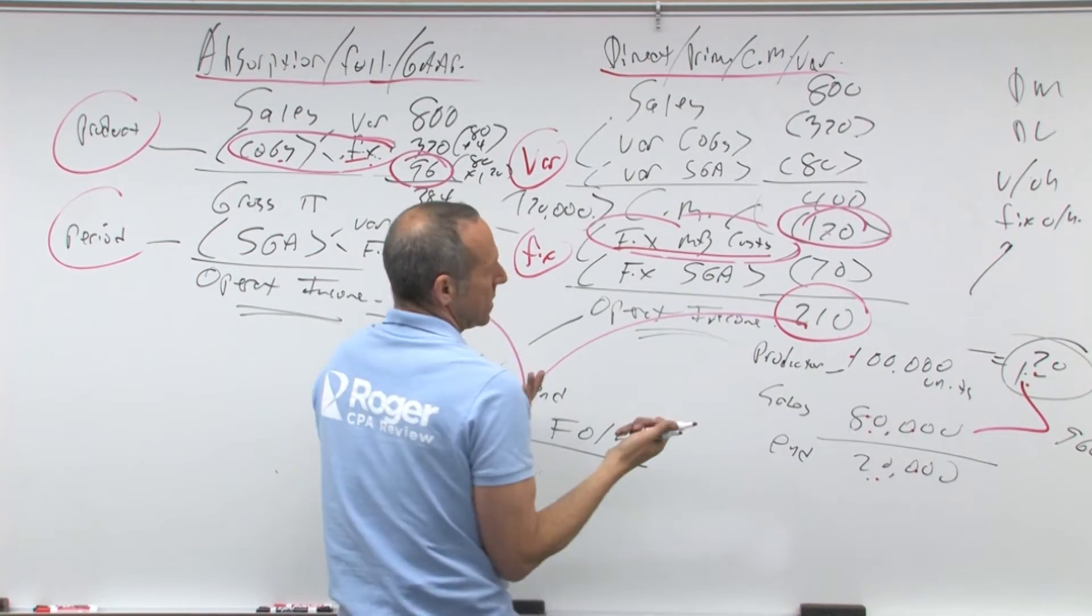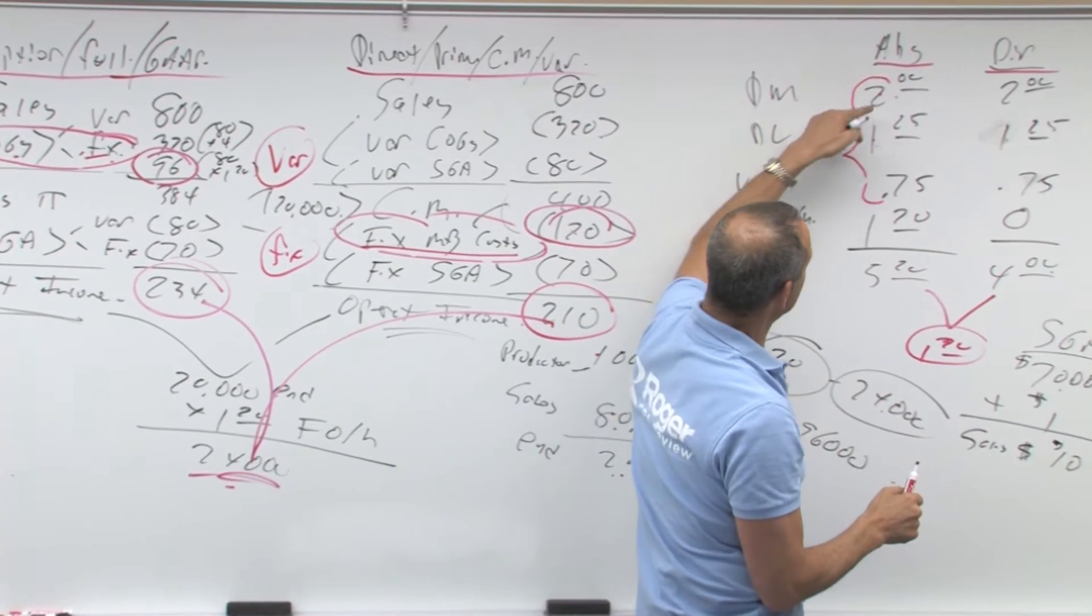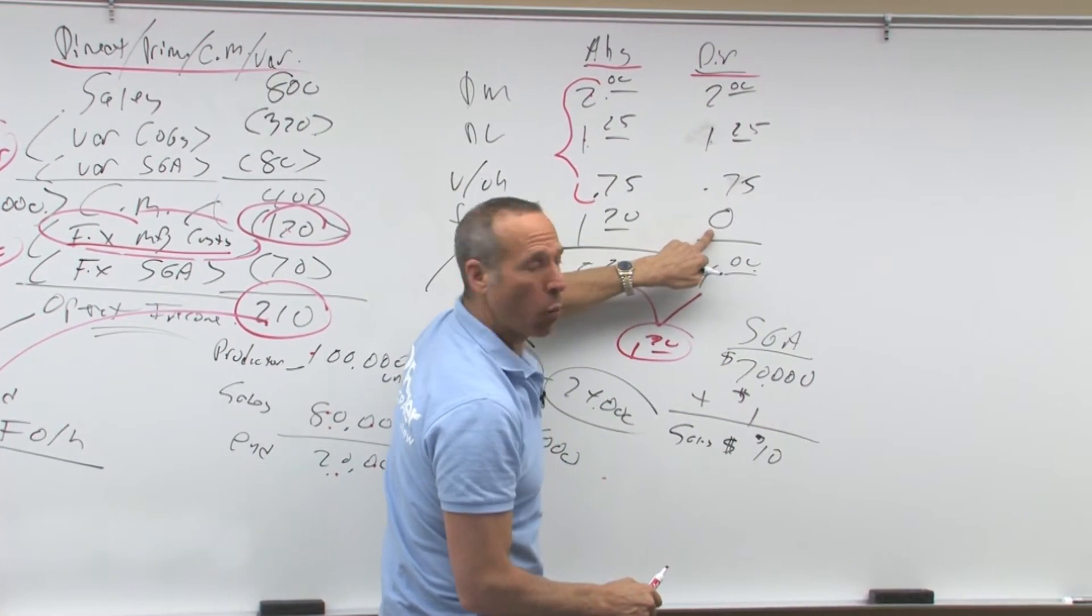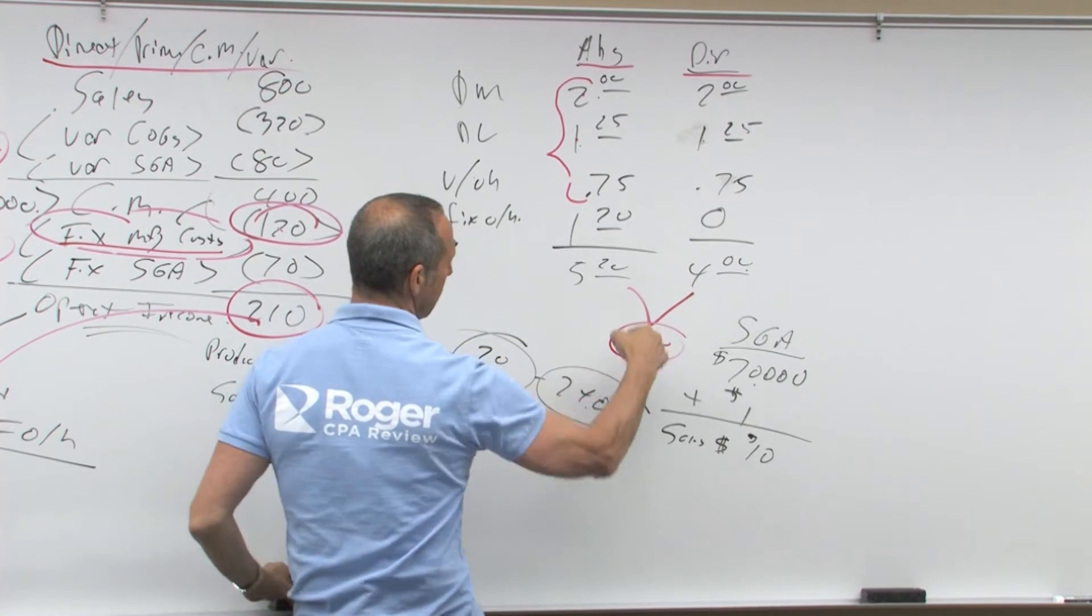The other thing is, how much is ending inventory? Well, you've got two, blah, blah, blah, how much here, and nothing because we expensed all 120. So the difference is $1.20.